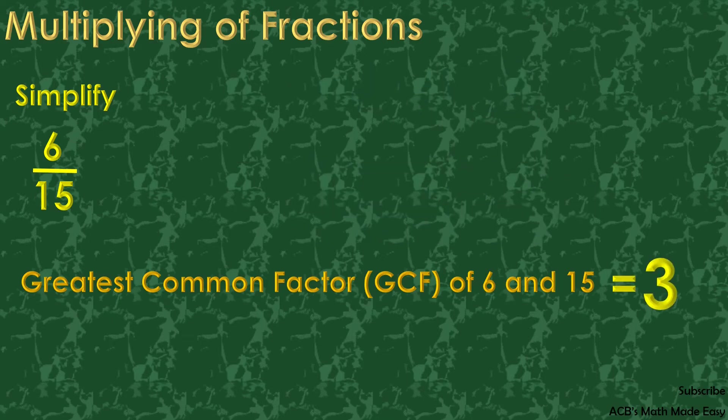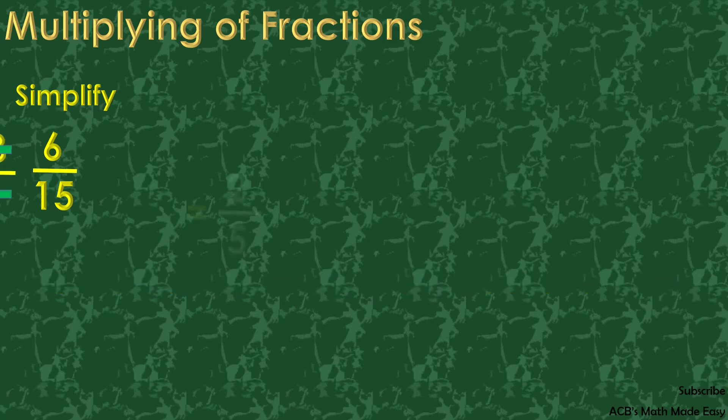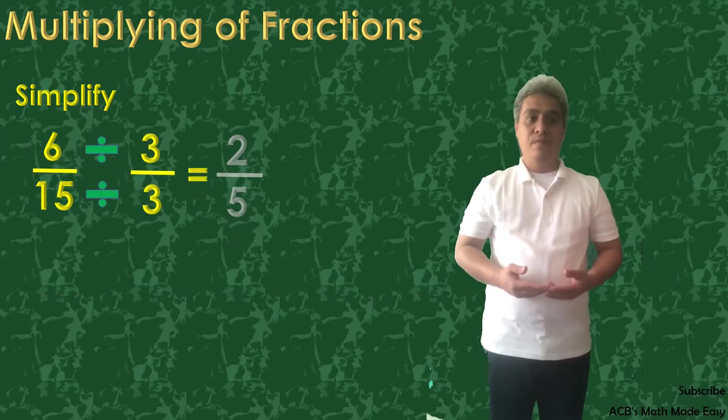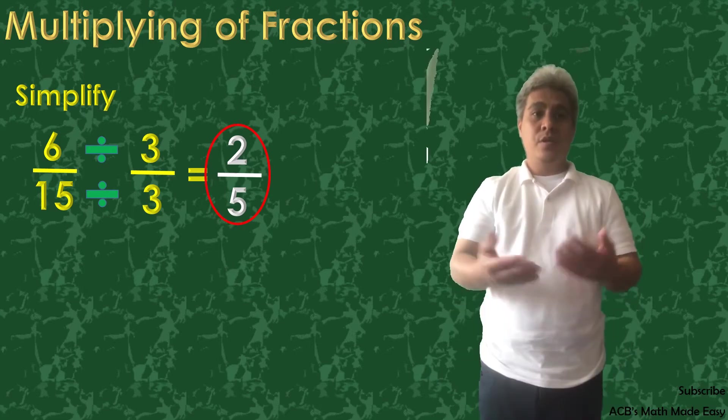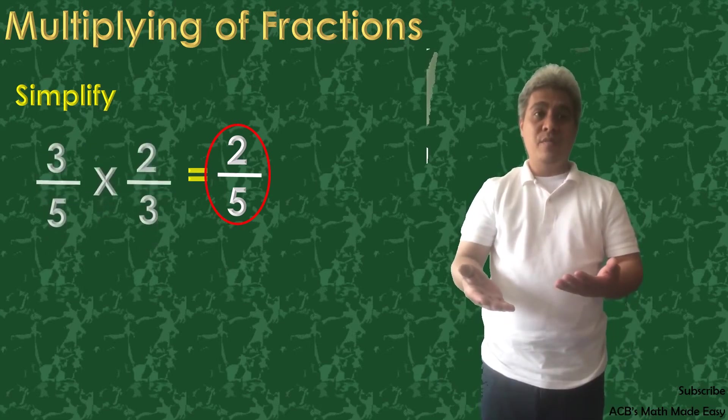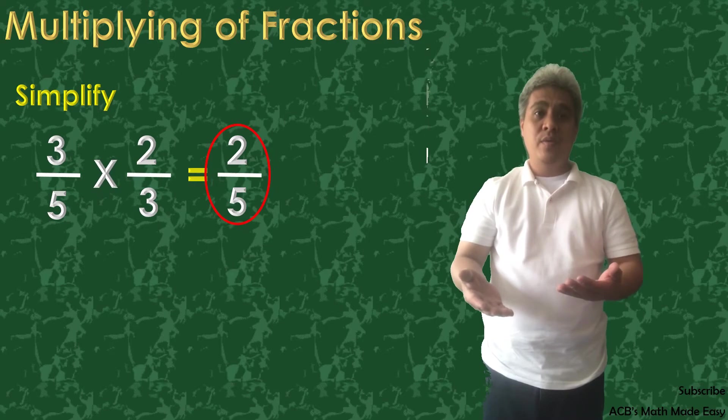GCF of 6 and 15 is 3. All we have to do now is to divide 6 and 15 by 3. And we will get an answer of 2 fifths. So 3 over 5 times 2 thirds is equal to 2 fifths.